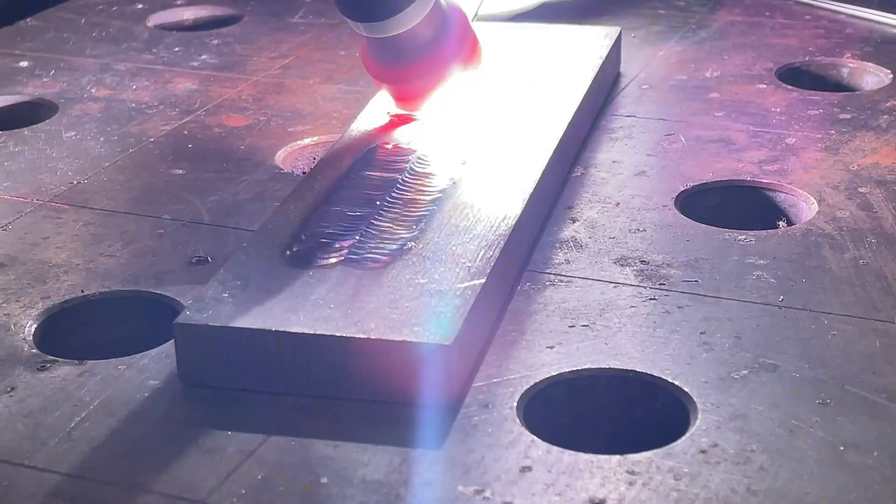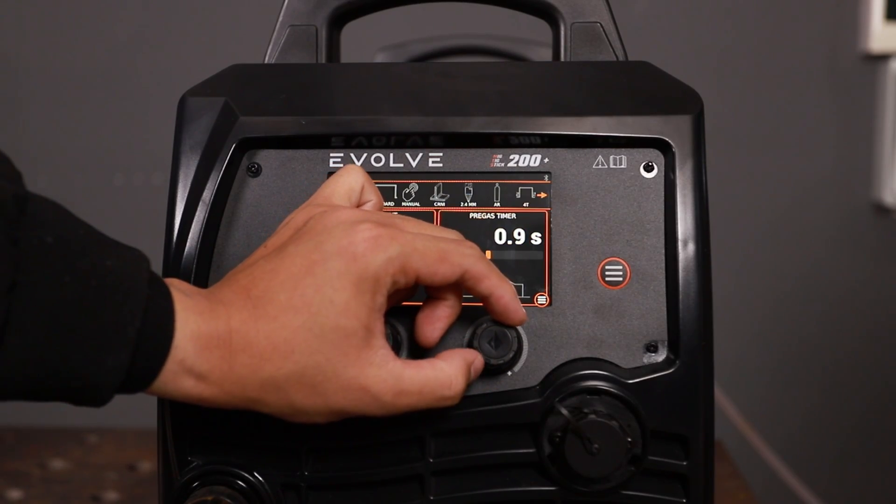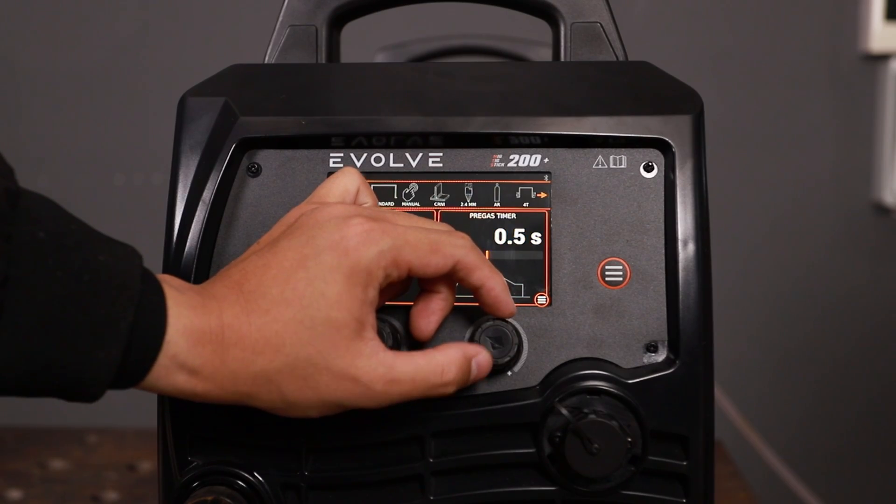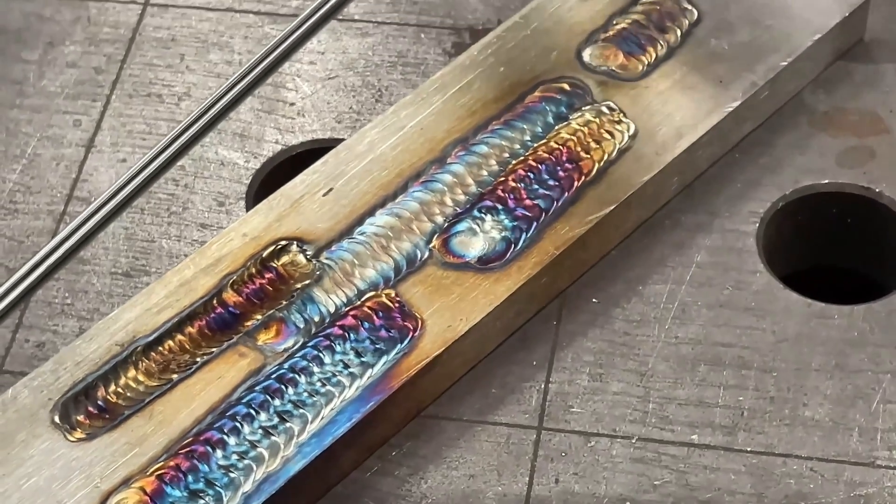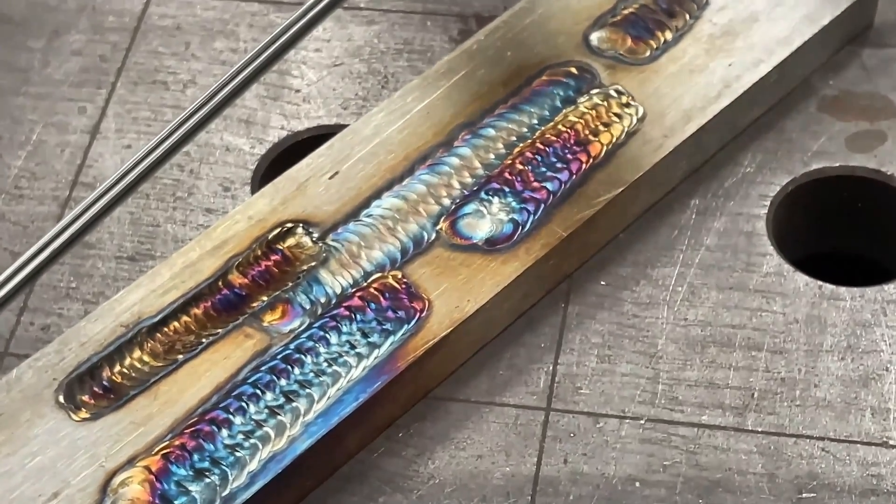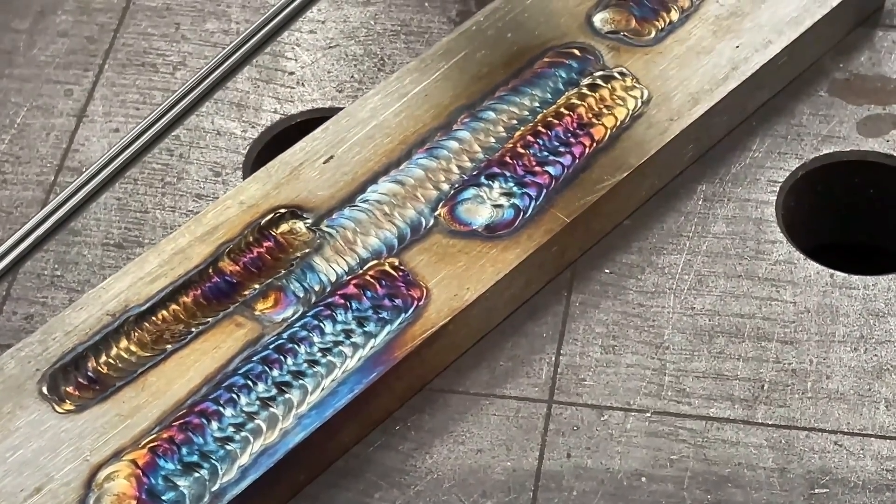Before starting the actual welding, use test samples to determine the suitable current, gas flow, and other parameters for the base material. Experiment with slightly different settings on test pieces to understand the impact of various parameters on the weld quality.